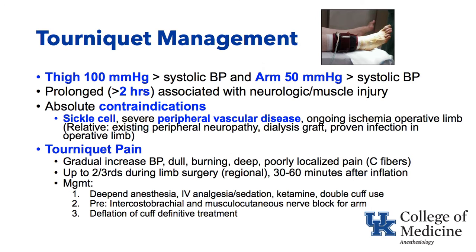Let's talk about tourniquet issues. Tourniquets are applied to extremities to stop blood flow to make surgery easier in that bloodless field. When a tourniquet is put on the thigh, it's usually inflated to about 100 mmHg above systolic blood pressure; on the arm, about 50 mmHg above systolic blood pressure, with variations among orthopedists. The pressure in the tourniquet must exceed the systolic blood pressure or blood flow will occur to that limb.